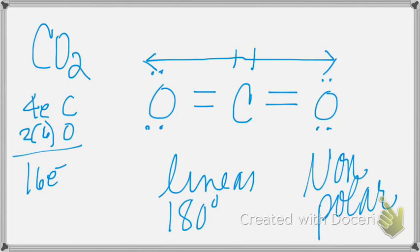Carbon will get four bonds every time, and carbon will never have lone pairs — except for one exception, and that is carbon monoxide. On your homework, there's carbon monoxide — draw a little star by it and put exception. It'll only get three bonds and it will have a lone pair. And I think that is all I wanted to cover today, and I want you to practice.